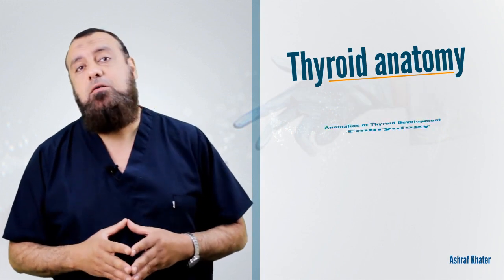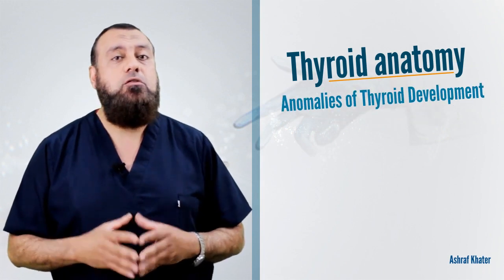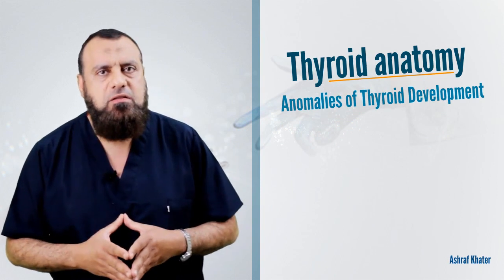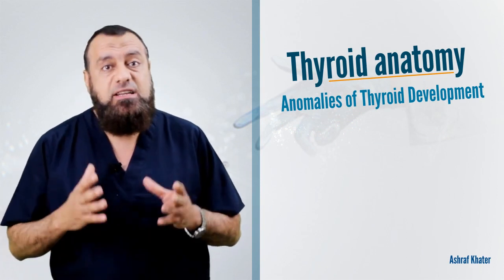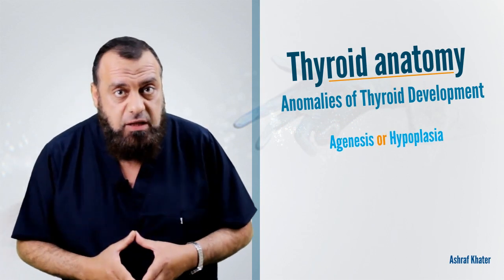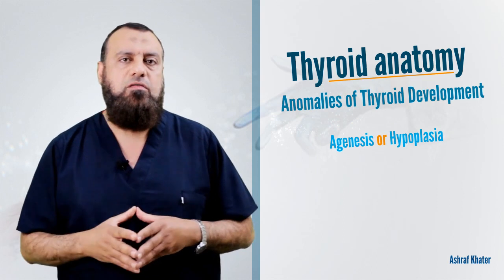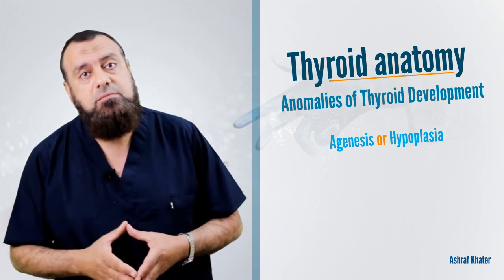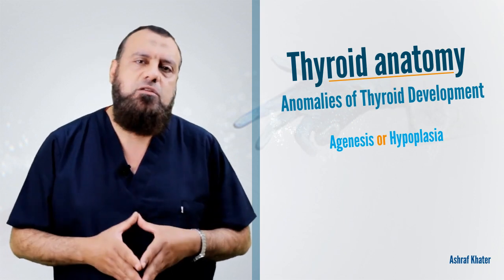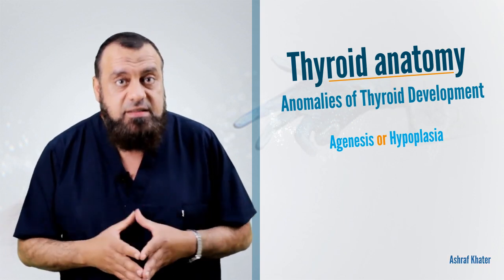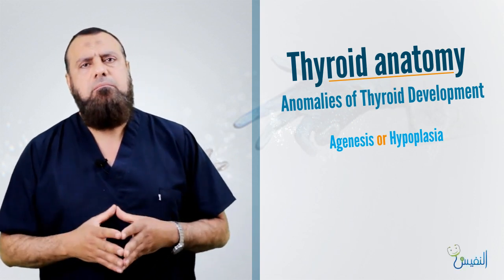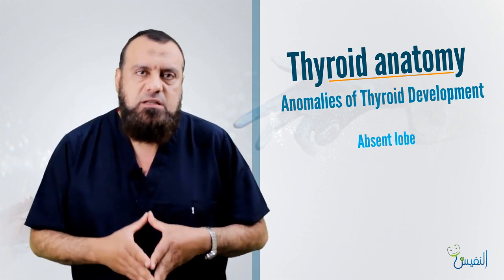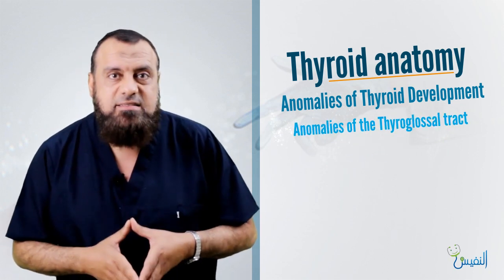We will speak about the anomalies of thyroid development. The first anomaly may be agenesis of the gland or hypoplasia of the gland, which eventually results in hypothyroidism, which is congenital and may lead to cretinism. There may also be an absent lobe and anomalies of the thyroglossal duct.